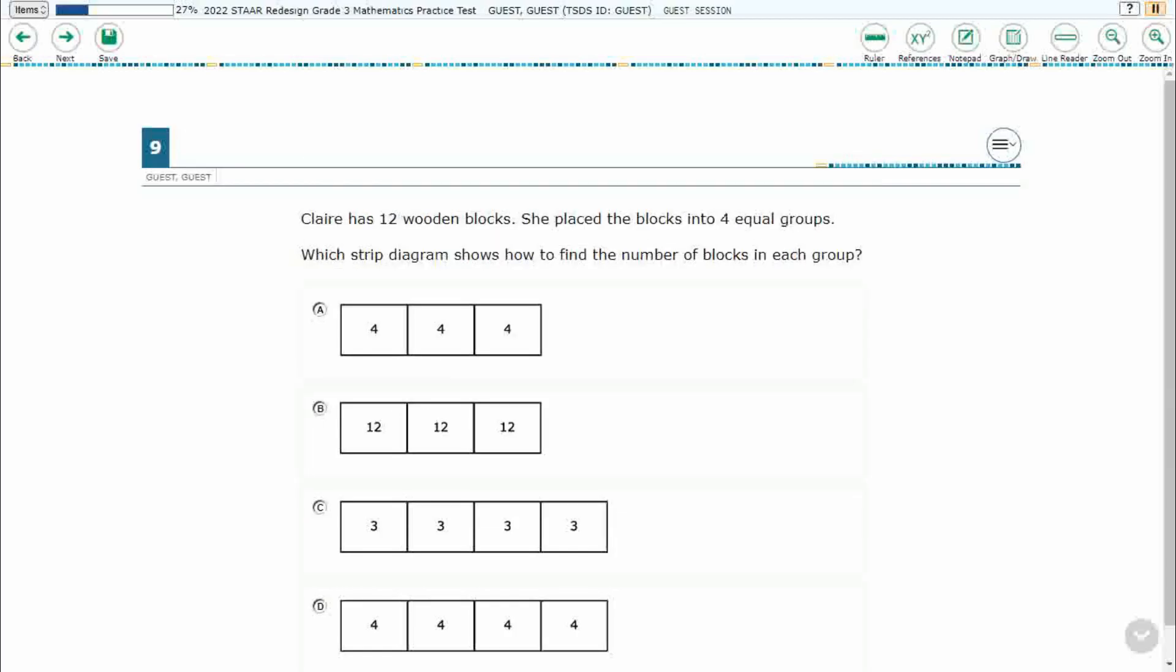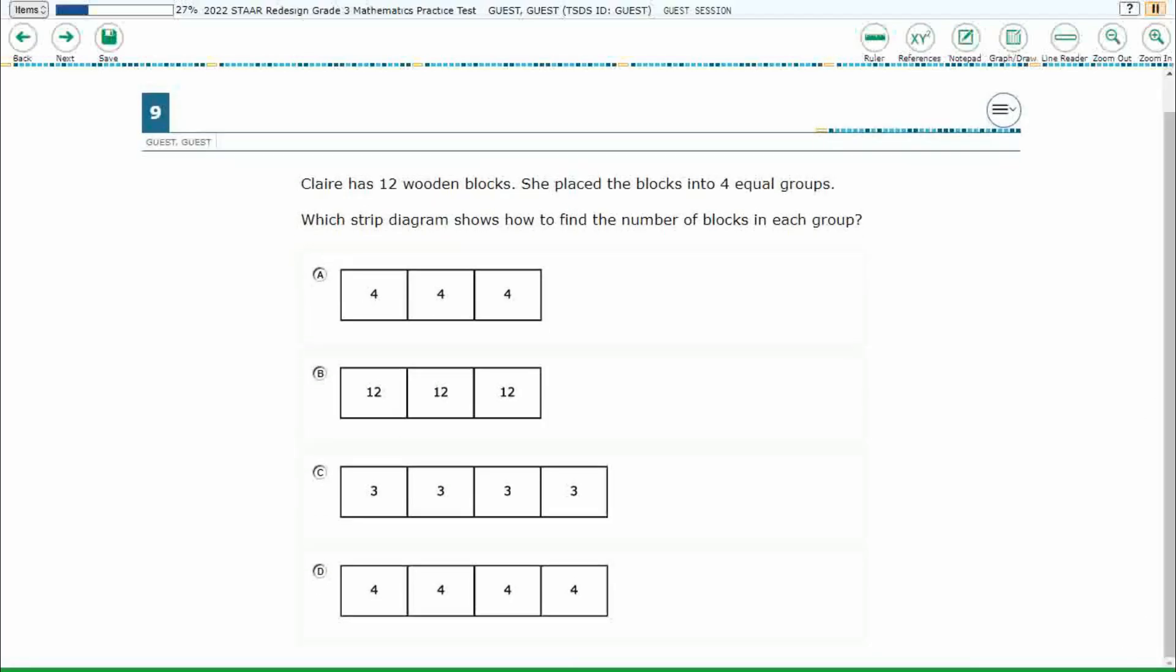If you haven't done so already, please go ahead and take a moment to pause the video, work this problem out on your own, unpause it, and we will look at our answers together. So looks like Claire's got 12 wooden blocks. She placed the wooden blocks into four equal groups and we just need to translate that into a strip diagram.